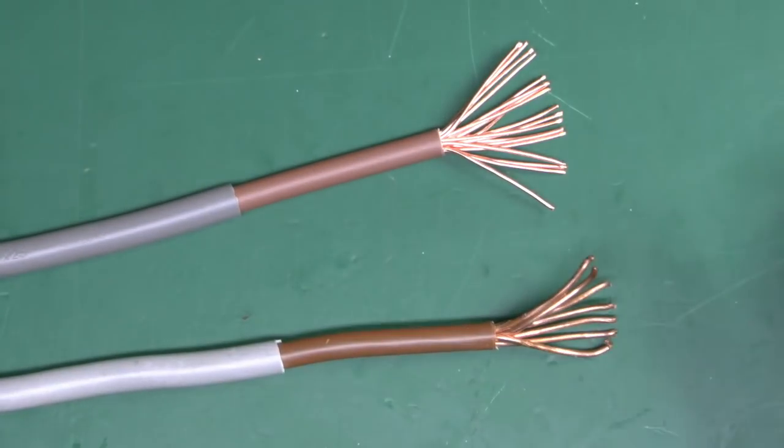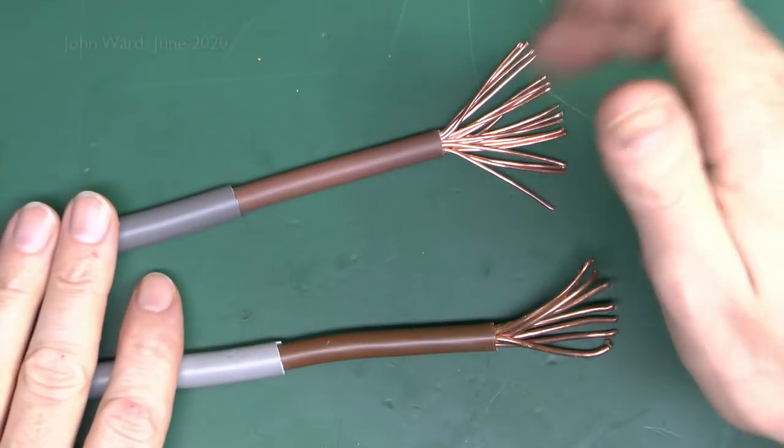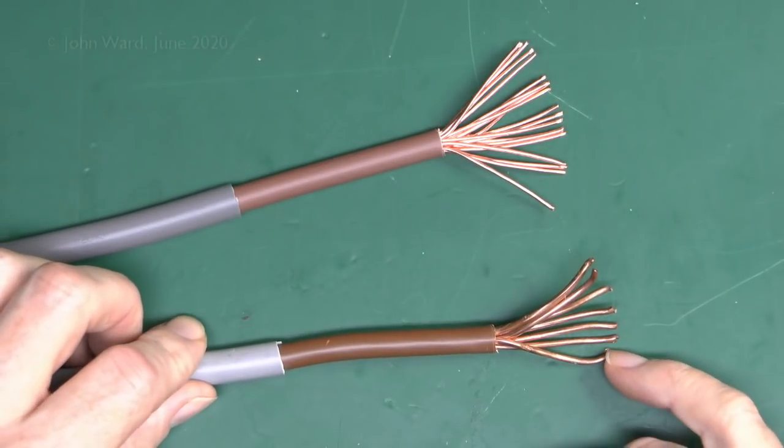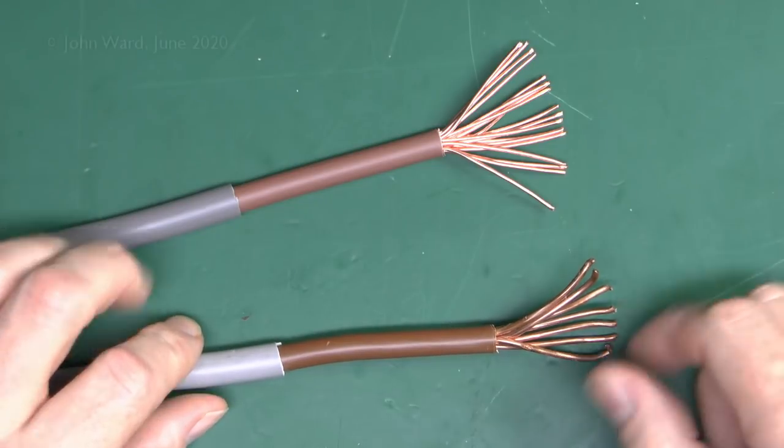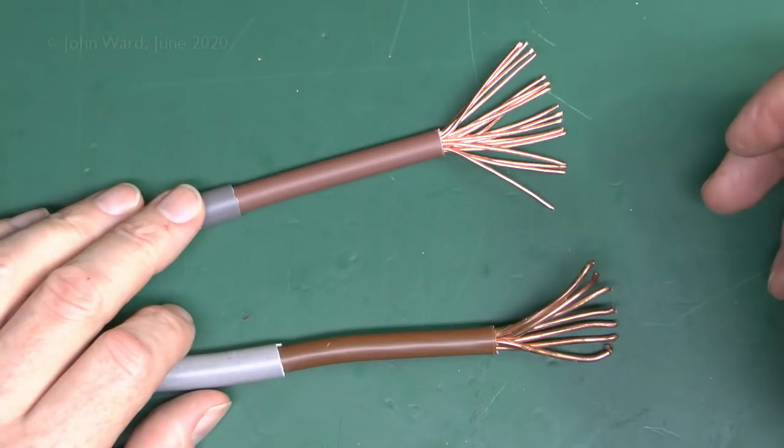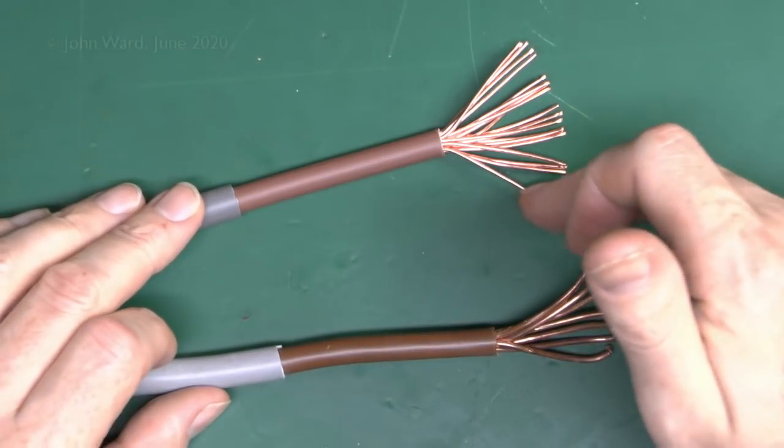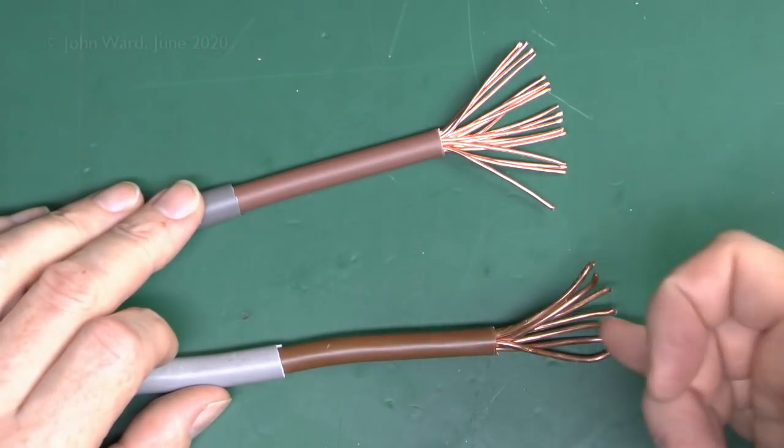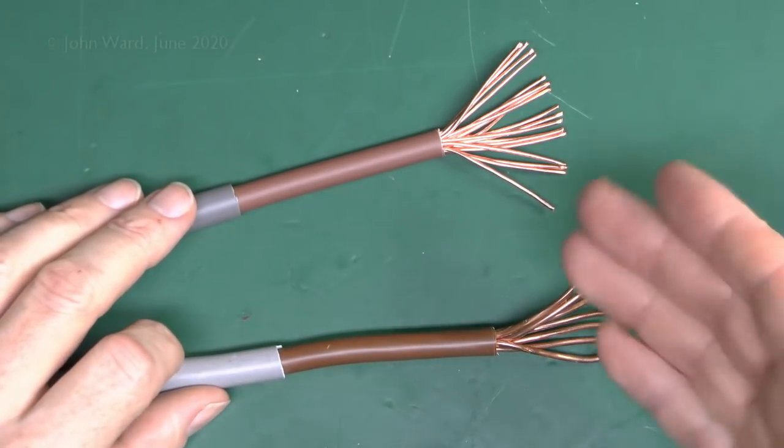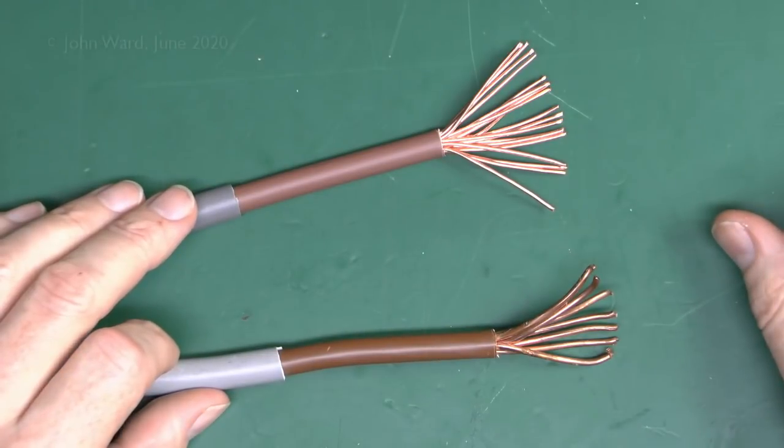Now just spread out these strands at the end of these two. This is far longer than you would strip them in normal use, but we can see here that this one only has seven individual strands within, whereas this one has considerably more. There's actually 19 in this one. So these are actually thinner strands, but there's more of them. These are thicker and there's less of them, so in total they both add up to 25mm², which of course is what you've actually paid for.